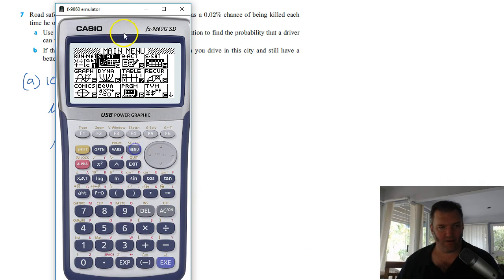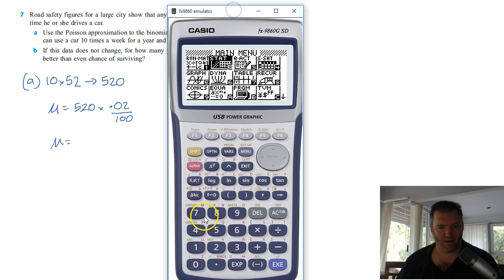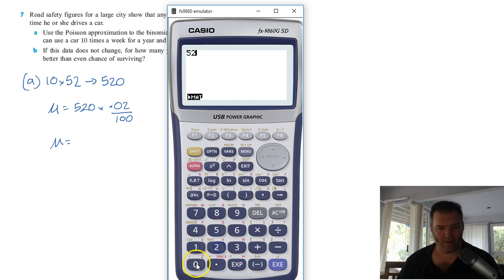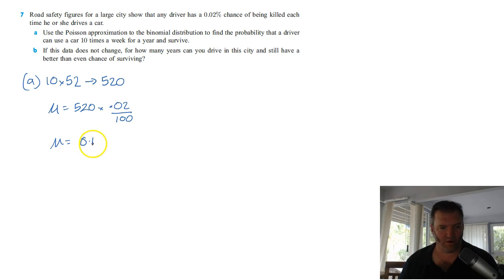And we can do that on our calculator very quickly, so here we go. So the expected number, 520 multiplied by 0.02 divided by 100. Now I know you could have all done that without a calculator, but let's just go with that. So, the expected number there is 0.104.